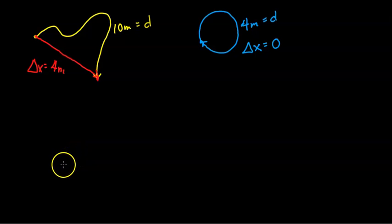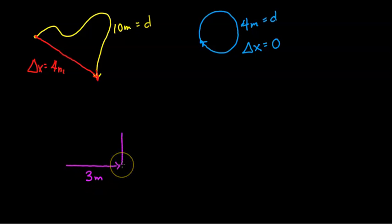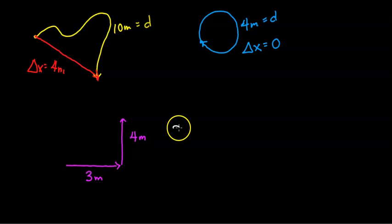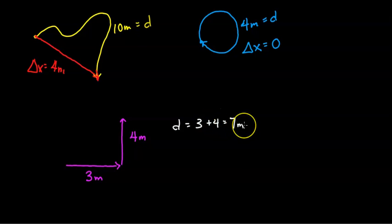One more example. Let's say you were to go east 3 meters and then north 4 meters. We want to find the distance and the displacement. The distance is simply 3 plus 4, which gives you 7 meters. That's how much ground was covered when you went 3 meters east and 4 meters north.